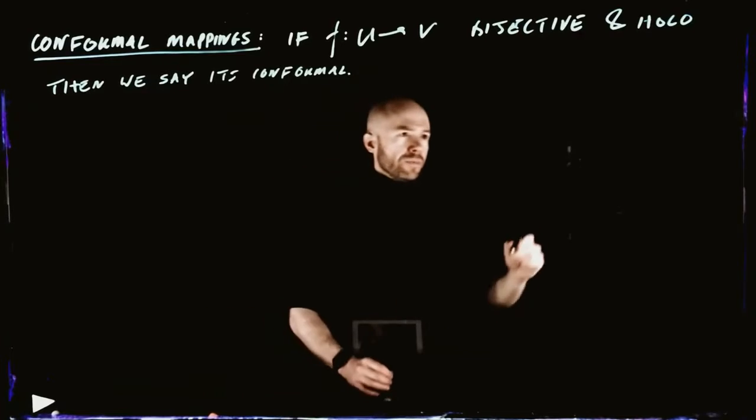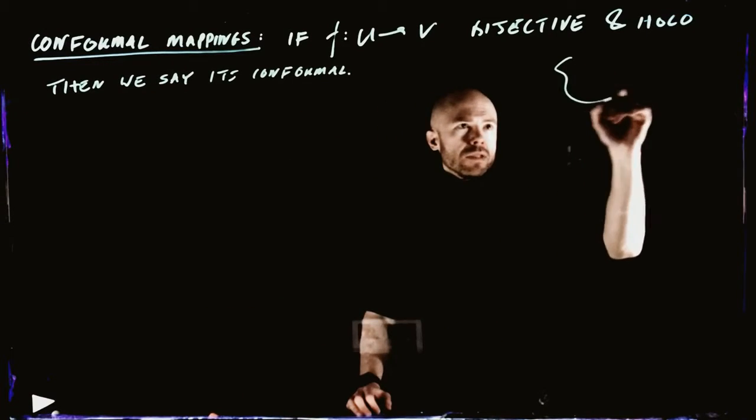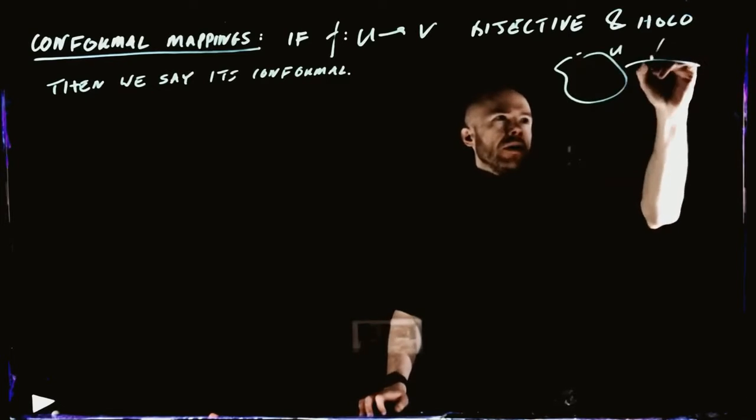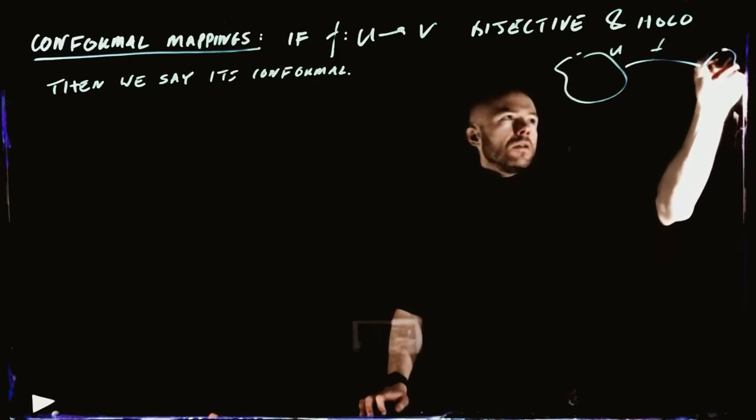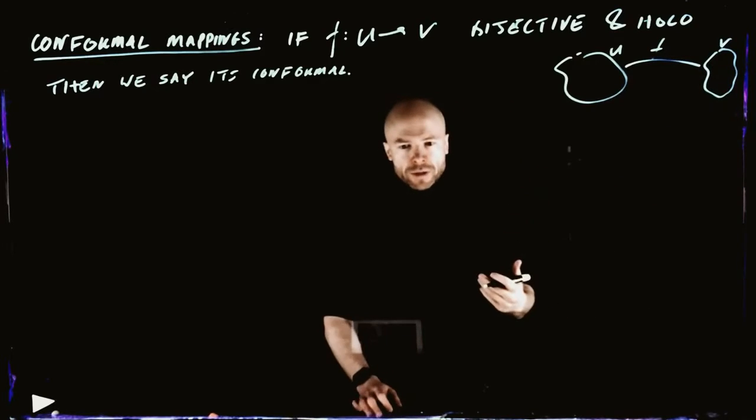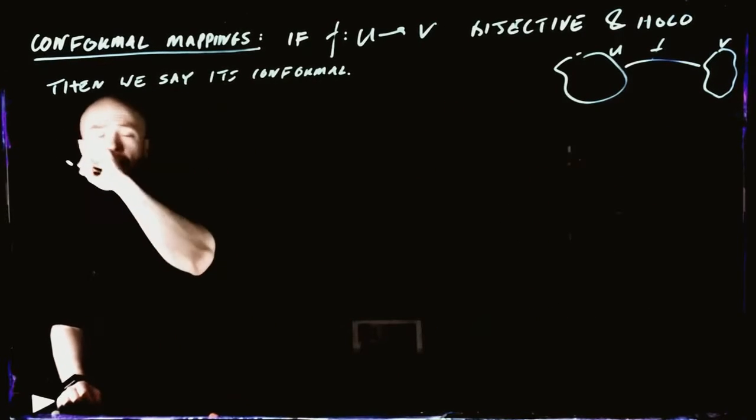So we have some subset of the complex plane U, and we are mapping it bijectively onto some subset V, and that's what we call conformal mapping, at least in the convention of Stein.